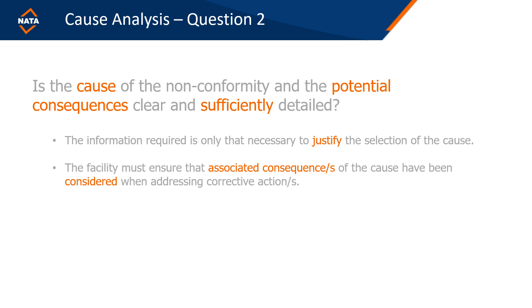The second question is: is the cause of the nonconformity and the potential consequences clear and sufficiently detailed? It asks you as the facility to examine the issue and come up with a justified reason for your selection of the cause. Importantly, the facility must also ensure that the associated consequences of the cause have been considered, looking further than the issue itself so you haven't missed any opportunities for improvement.